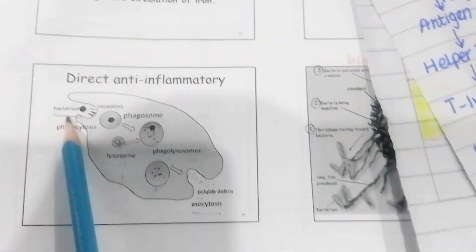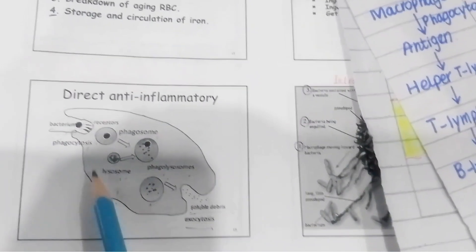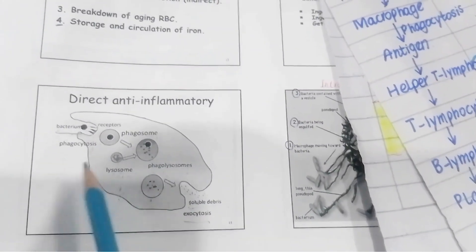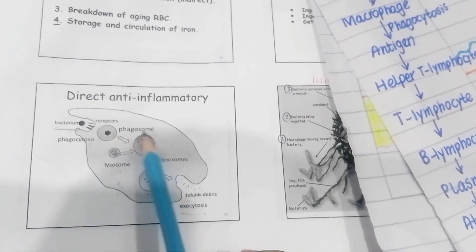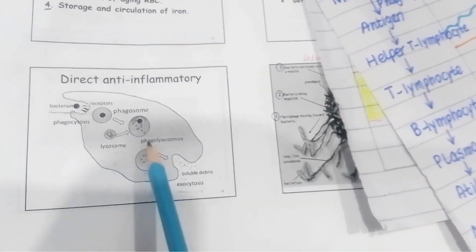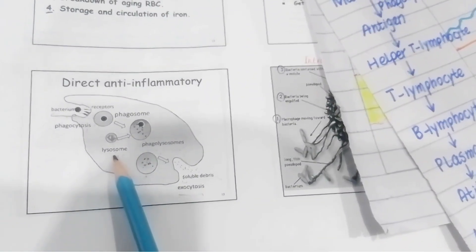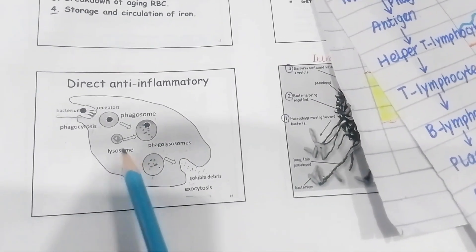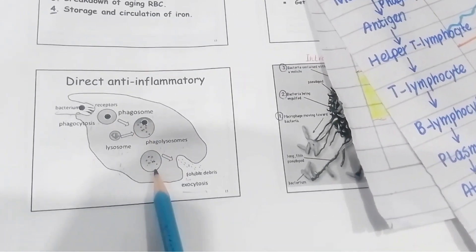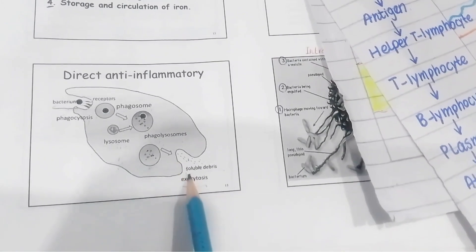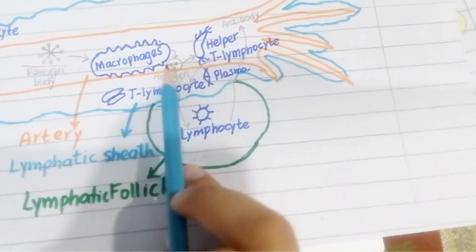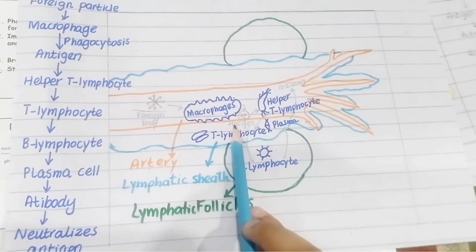When any foreign particle like a bacterium enters the bloodstream, the macrophage is attracted by chemotaxis and ingests it by phagocytosis. After phagocytosis, this particle inside the macrophage is called a phagosome. The lysosome in the macrophage fuses with the phagosome to form a phagolysosome. The lytic enzymes in the lysosome — such as proteolytic enzymes and lipases — digest the foreign particle, and the remaining undigested material is removed by exocytosis.